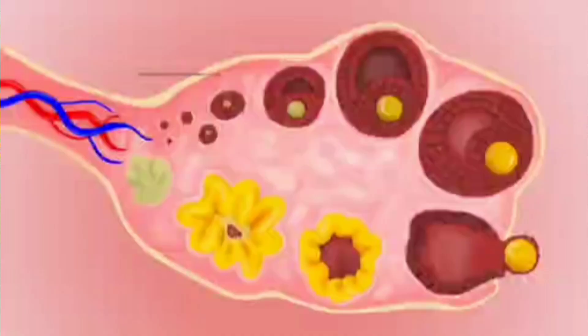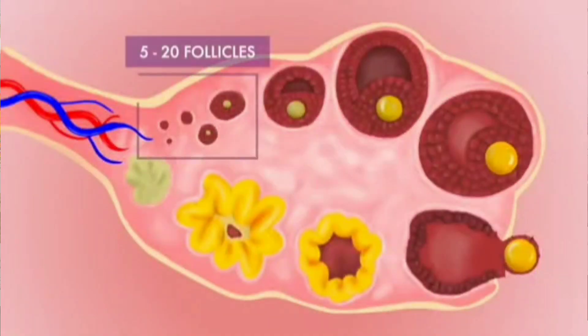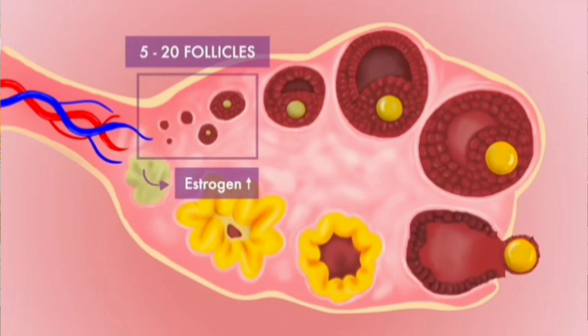These hormones start acting on the ovaries. There are multiple small, tiny follicles in the ovaries, and inside these follicles there are eggs. Because of the effect of FSH, around five to twenty follicles are selected in each cycle.